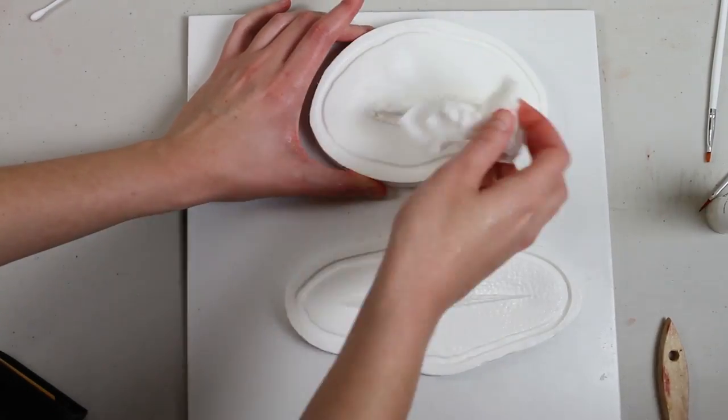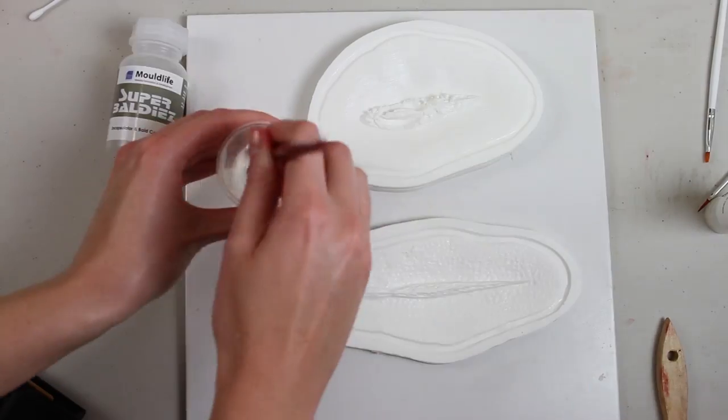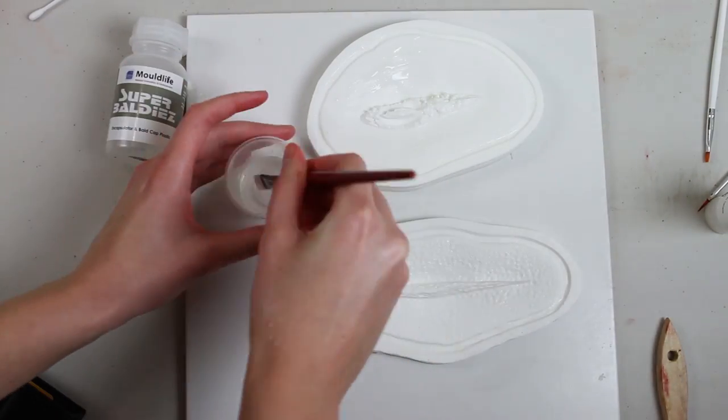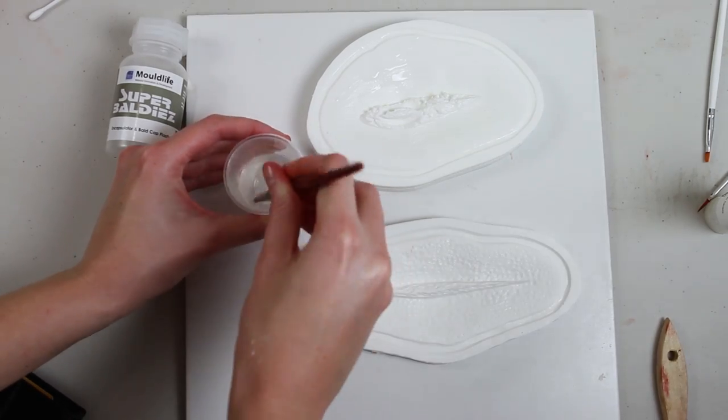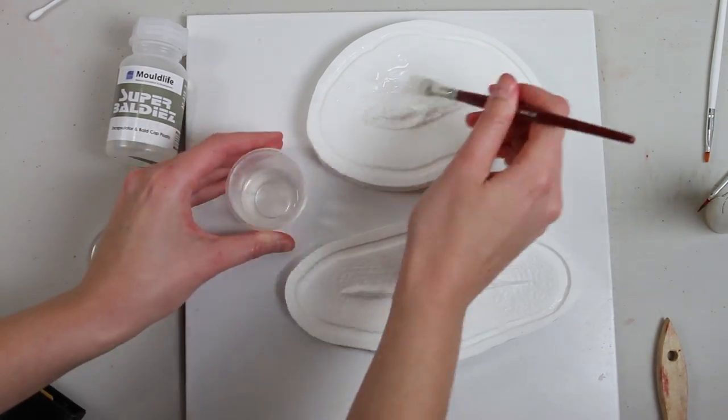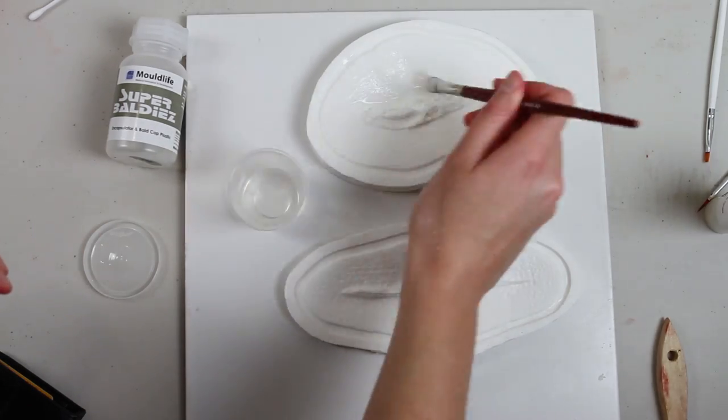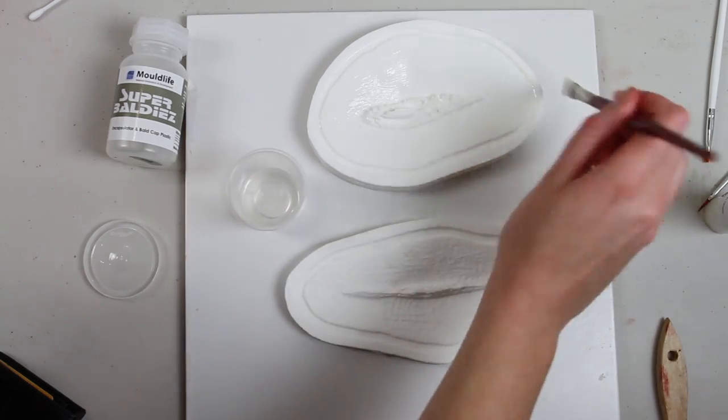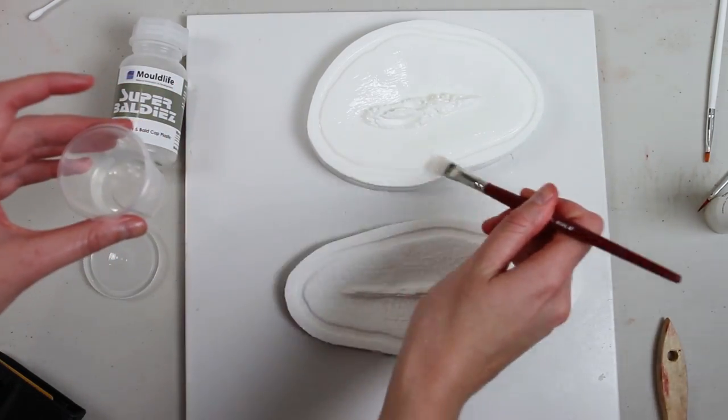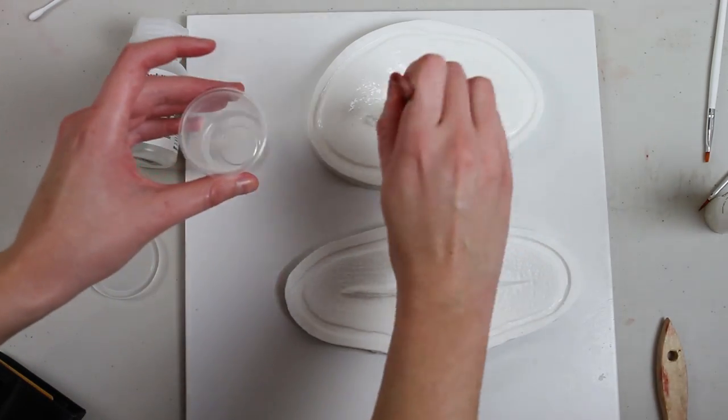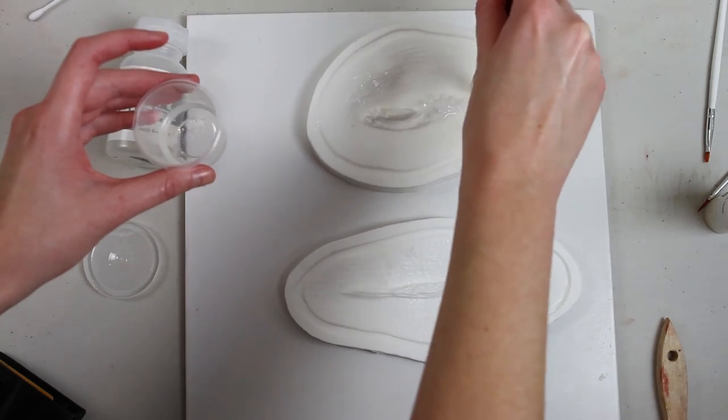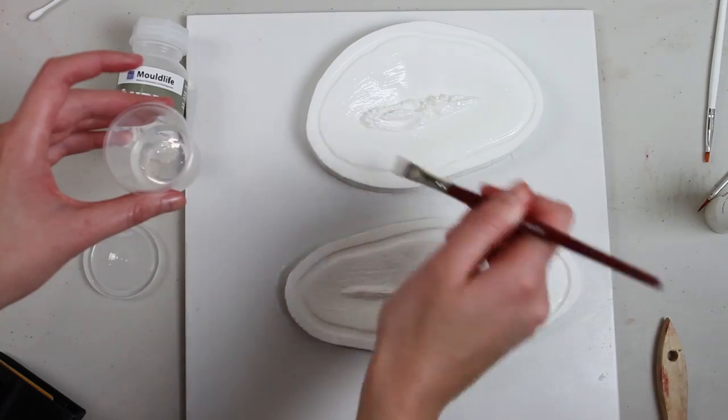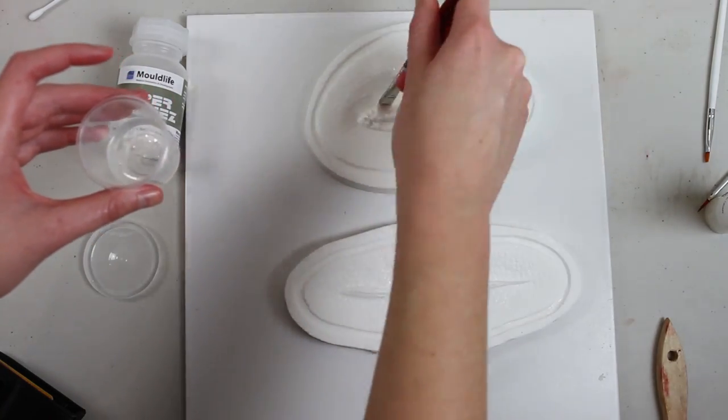The silicone needs to be encapsulated in a bald cap plastic. There are several different kinds, but my favorite is Mold Life Super Baldies because it is thinned and blended out with 99% isopropyl alcohol, which I find to be better to use on skin than acetone because it's a little bit less irritating. I diluted it with isopropyl alcohol about 50-50, and I'm going to brush it over the entire mold and leave it to dry. I'm going to do that three times so I have three layers of the Super Baldies.